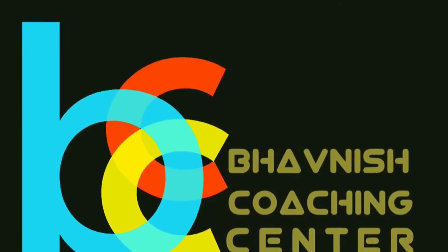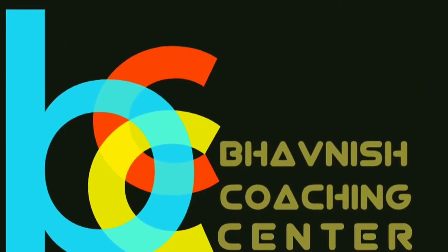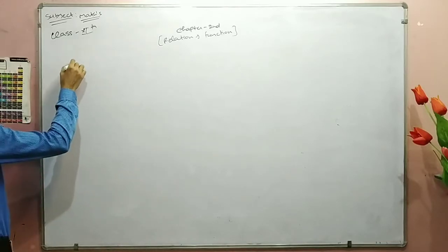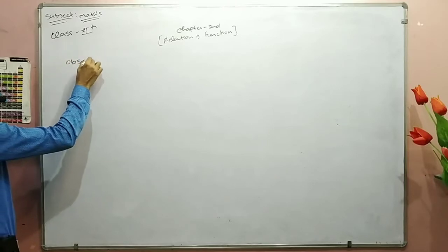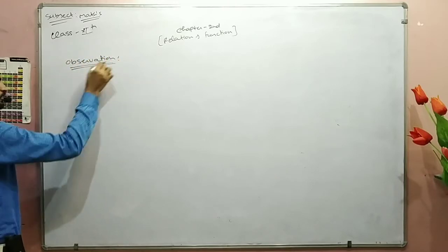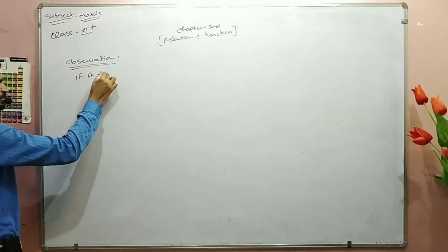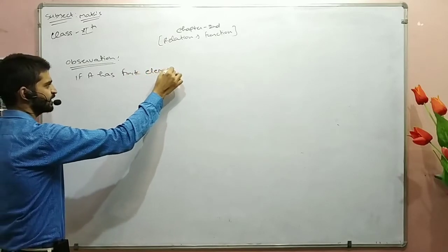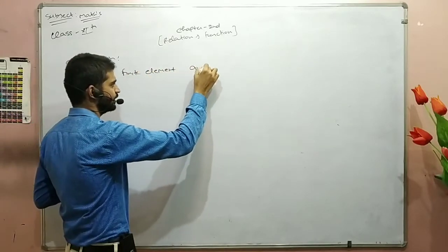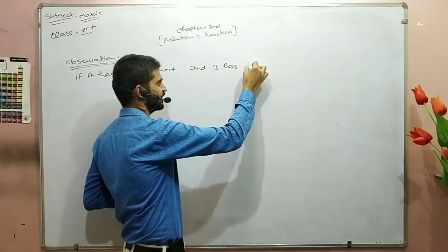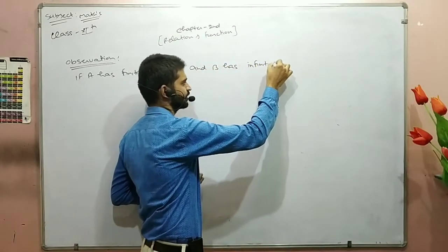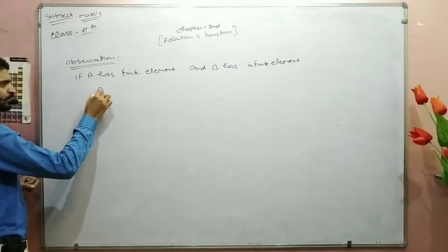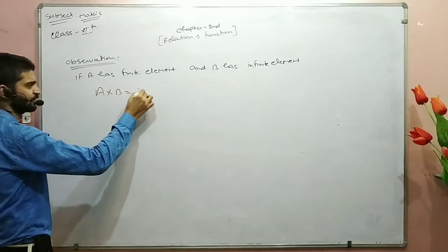I will discuss some observations. If A has a finite element — finite element is a concept — and B has an infinite element, then A cross B has infinite elements.